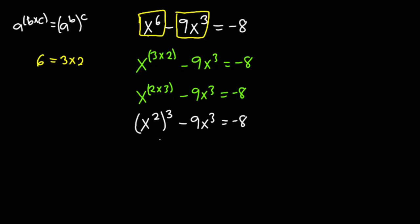What I can do here is interchange the positions of these two exponents. Because multiplication is commutative, x squared, all exponent 3, can also be written as x exponent 3, everything squared. That still gives us the same result. So this minus 9x cubed is equal to negative 8.